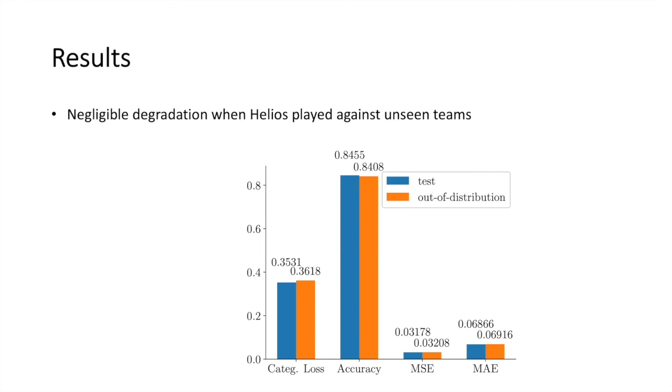Finally, the trained model showed negligible degradation in performance when evaluated outside of its training distribution. The accuracy, for example, decreased to 84% when Helios played against teams it had not seen during training.